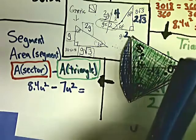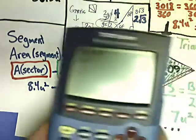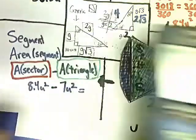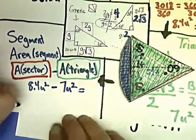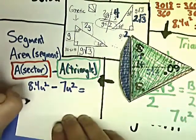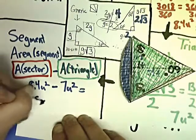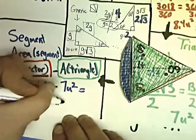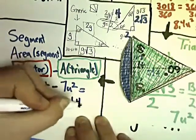I mean, whatever. It's your ACT score, not mine, or your test score, whatever it is. And I get 1.4. So my final answer for my segment is that the area of the segment equals 1.4 units squared.